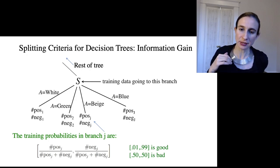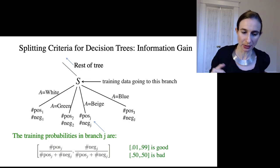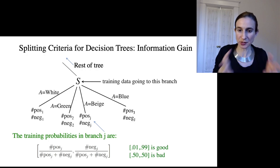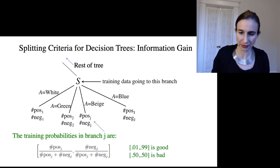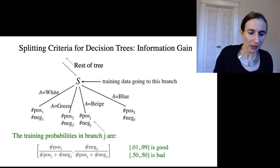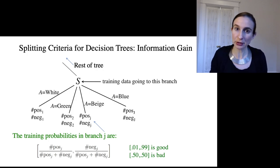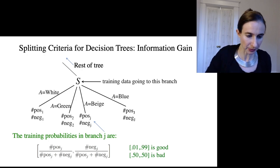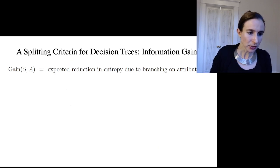And so the training probabilities in branch j look like this—so this is the fraction of positives that go into the leaf and the fraction of negatives that go into the leaf. And what we really would like here is the node to be as pure as possible. So we want probabilities that are very uneven, right? If the probabilities were even that means that that split really didn't help us distinguish the positives from the negatives.